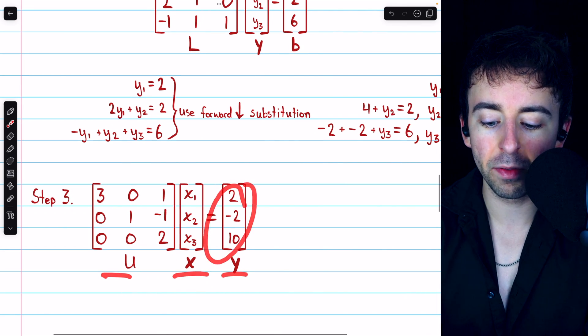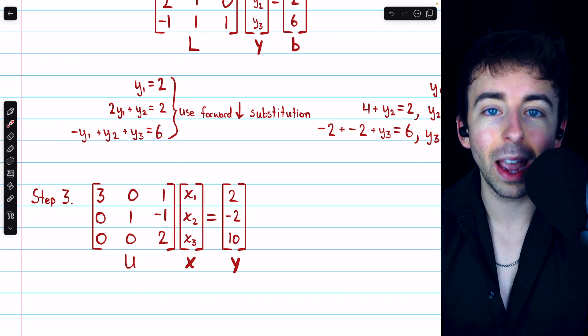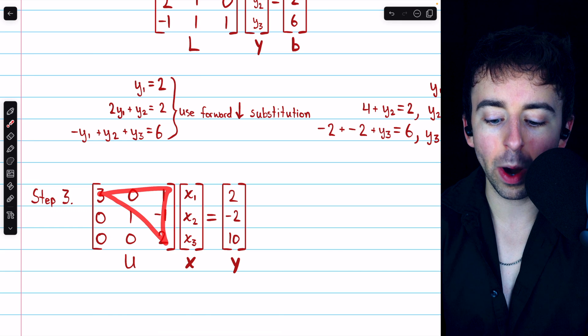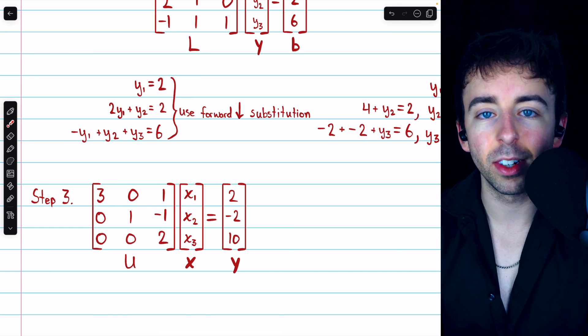We just solved for all of those values, and now we can solve this system for X, the variables that we're actually trying to find. Again, this is easy because we have an upper triangular matrix as the coefficient matrix, and thus we can solve this using back substitution.